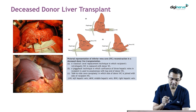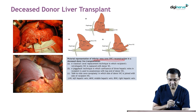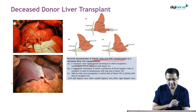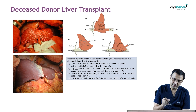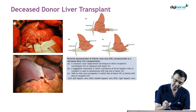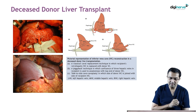There are three different ways of doing infra-vena cava reconstruction. The classical caval technique is one in which the recipient retrohepatic IVC is replaced with the donor IVC — as discussed previously. In this technique, the recipient IVC has been completely replaced by the donor infra-vena cava.